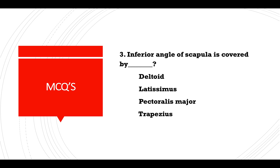MCQ: The inferior angle of the scapula is covered by — deltoid, latissimus dorsi, pectoralis major, or trapezius? Answer: Latissimus dorsi.